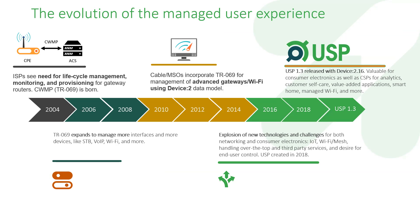That includes IoT, more nodes in the home of differing technologies — not just Wi-Fi — and things on the other side of the gateway like set-top boxes and VoIP devices, and things have continued to accelerate. In 2015, we all got together and said it's time to think about what's next for TR69. And that gave birth to USP, which version 1.0 was created in 2018.